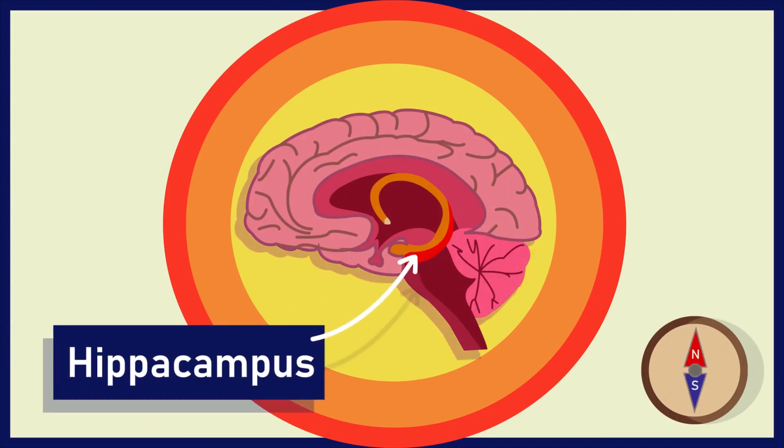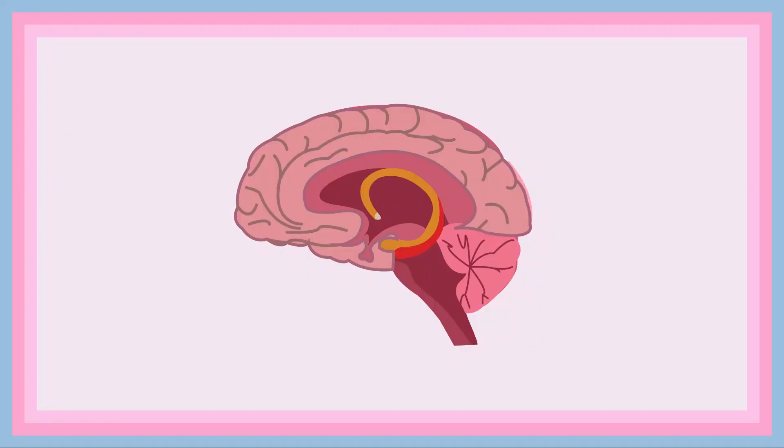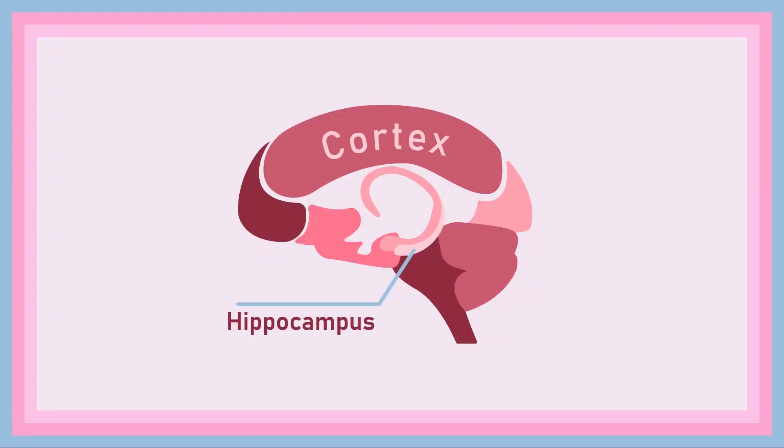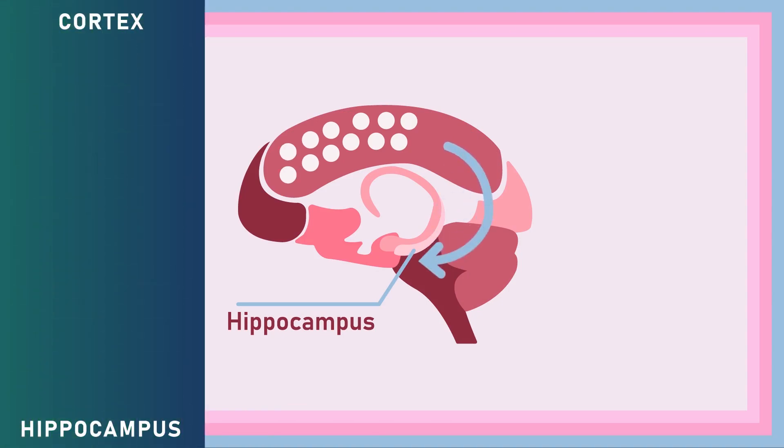Spatial memories which are used for navigation, the ones responsible for you knowing the way home, are saved in a region of the brain known as the hippocampus. When a spatial memory is created, information flows from the cortex, the richest part of the brain with nerve cells, to the hippocampus and vice versa when it is retrieved.